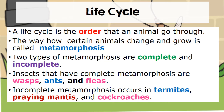The way certain animals change and grow is called metamorphosis. Two types of metamorphosis are complete and incomplete. Insects that have complete metamorphosis are the wasps, the ants, and the fleas. Incomplete metamorphosis occurs in termites, praying mantises, and cockroaches.